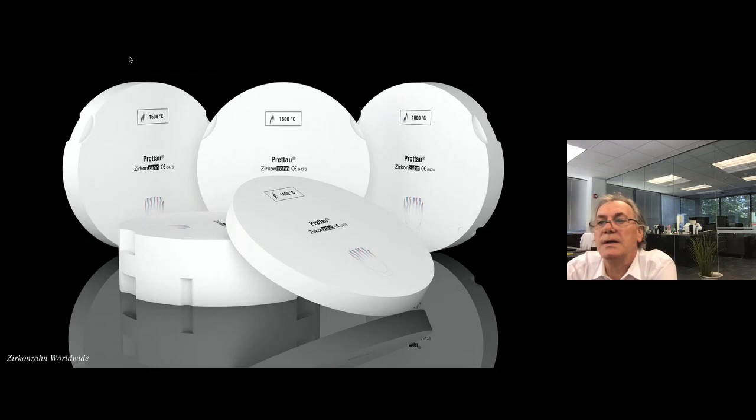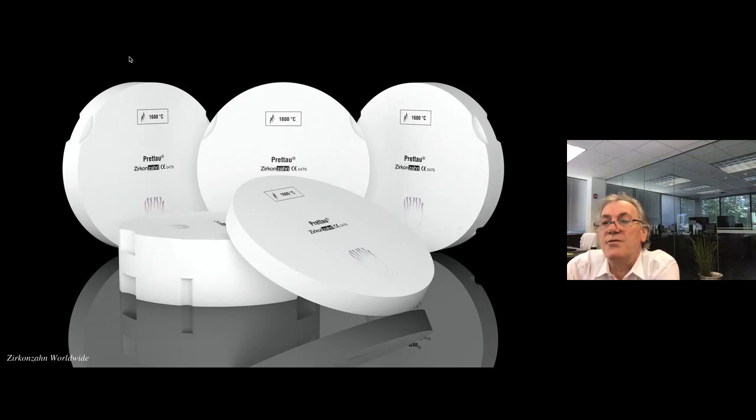The pretail zirconia is born for full arch monolithic restorations, mainly in implant dentistry. 1,200 MPa in strength. It's a great combination between strength and translucency. I believe that it works best with a very light layering of enamel porcelain 2 to 3 tenths of a millimeter, especially on the buccal surface, and it is sufficient in the anterior region to improve its characteristics for light absorption.